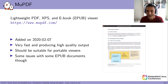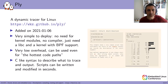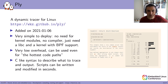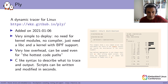The next one is Ply, described as a dynamic tracer for Linux. It's very simple to deploy — you don't need kernel modules, no compiler unlike what you need for SystemTap. You just need a libc and a modern kernel with BPF support. It has very low overhead so it can be used even for the hottest code paths. There's a C-like syntax to describe what to trace, and scripts can be written and modified in seconds.